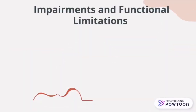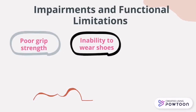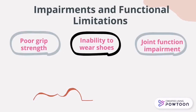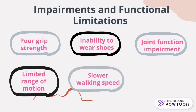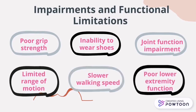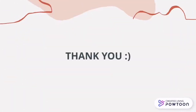For impairment and functional limitation, people with gout may experience reduced grip strength, inability to wear shoes, jaw function impairment, limited range of motion, slower walking speed, and reduced lower extremity function.